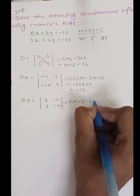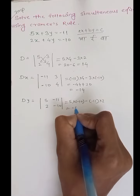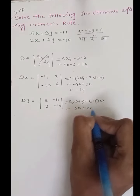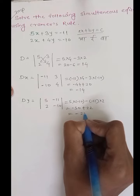Dx equals 5 times minus 10 minus 11 times 2, which equals minus 50 plus 22 equals minus 28. Wait, Dx calculation: minus 11 times 4 minus 3 times minus 10 equals minus 44 plus 30 equals minus 14.